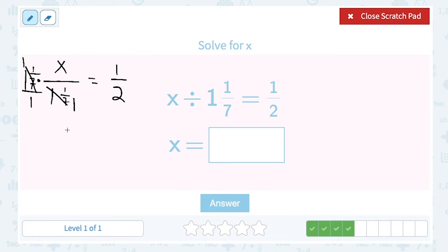To get x alone, if I've divided by 1 and 1 seventh, I multiply by 1 and 1 seventh. We don't want to multiply a fraction by a mixed number - we need to turn this into an improper fraction. So 1 and 1 seventh: 7 times 1 is 7 plus 1 is 8, so 8 sevenths.